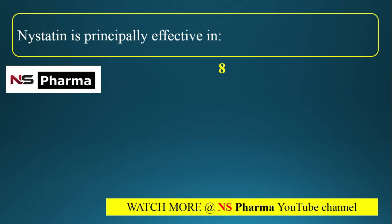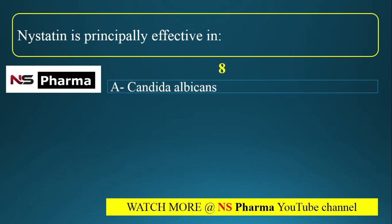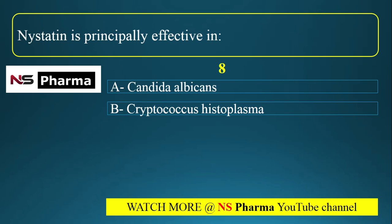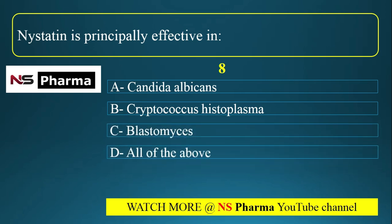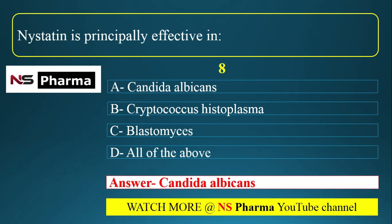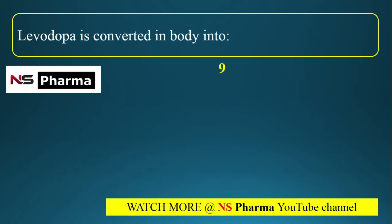Question 8: Nystatin is principally effective in — (a) Candida albicans, (b) Cryptococcus/Histoplasma, (c) Blastomyces, (d) all of the above. Nystatin is an antifungal drug principally effective against Candida albicans.